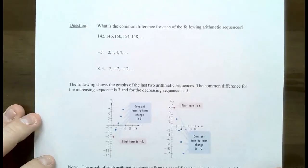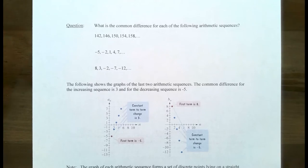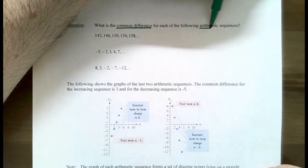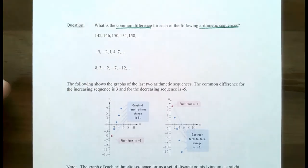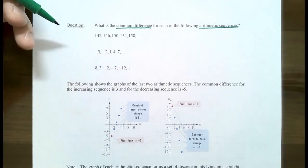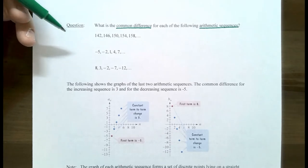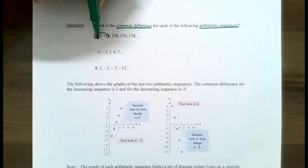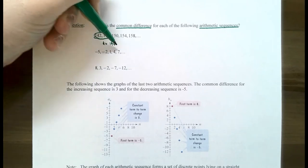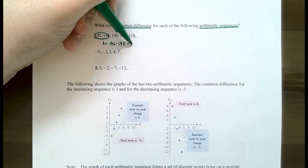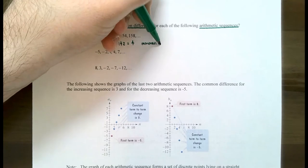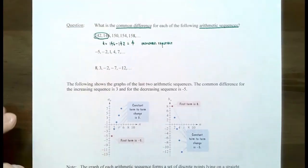Let's try out this first problem: what is the common difference for each of the following arithmetic sequences? The first sequence is 142, 146, 150, 154, 158. It doesn't matter which two consecutive or successive terms you choose. Let's choose 142 and 146. If you subtract 146 minus 142, this gives you the common difference. So 4 is the common difference for this sequence. As long as you know it's an arithmetic sequence, you can take any two consecutive terms.